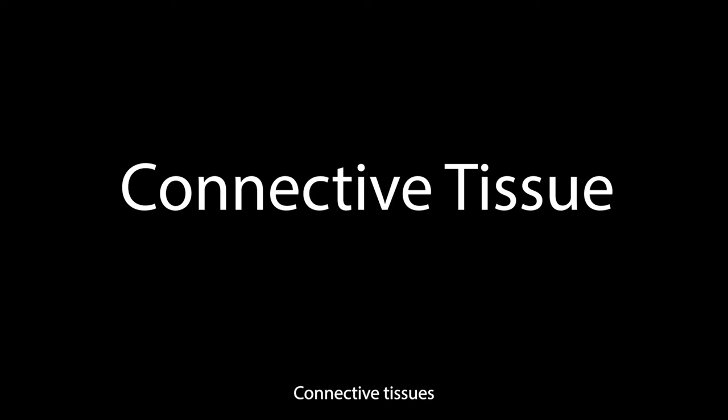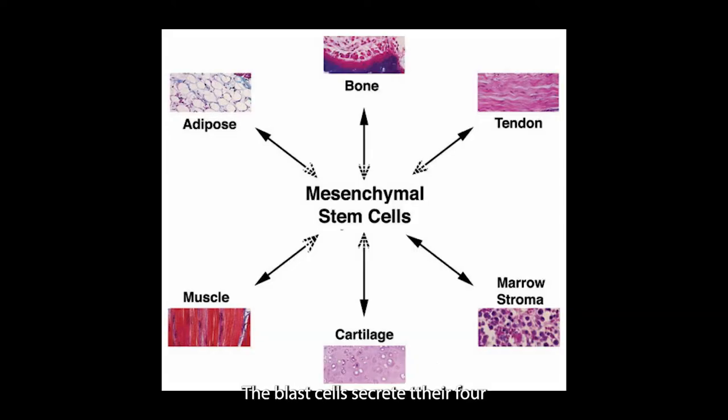Connected tissues, connecting for you. They're all together classified 'cause they're all derived from mesenchyme. The blast cells secrete their four major types: fibroblasts secrete CT proper, osteoblasts secrete bones, chondroblasts secrete cartilage, and hemocytoblasts produce blood cells.